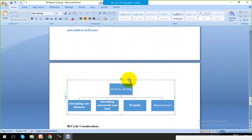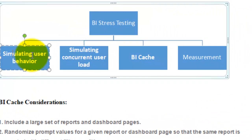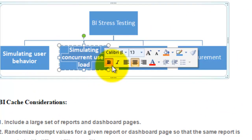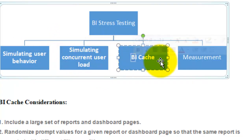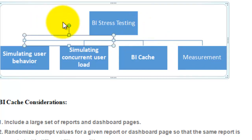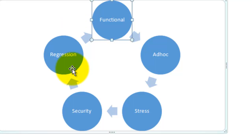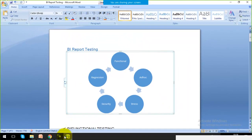Stress testing checks how the system manages when a single user or multiple users are accessing the same report simultaneously — what is the behavior, what is the cache amount, and how much data it can hold at one time. This measures how the system handles stress. These are all the ways to implement different kinds of testing within reports, just as we have ETL testing.